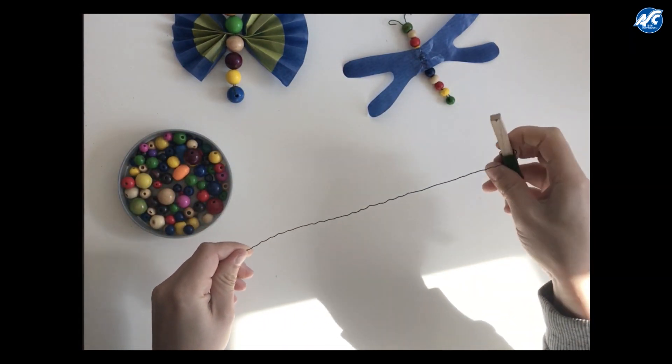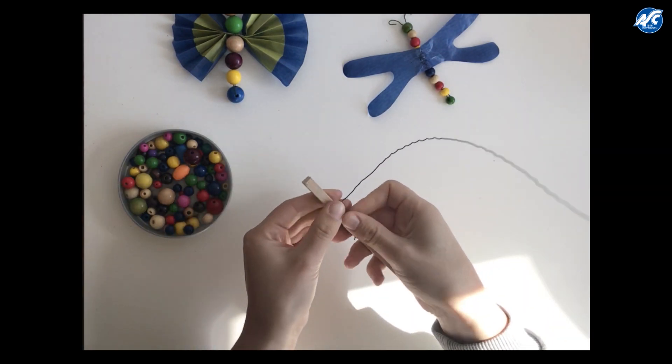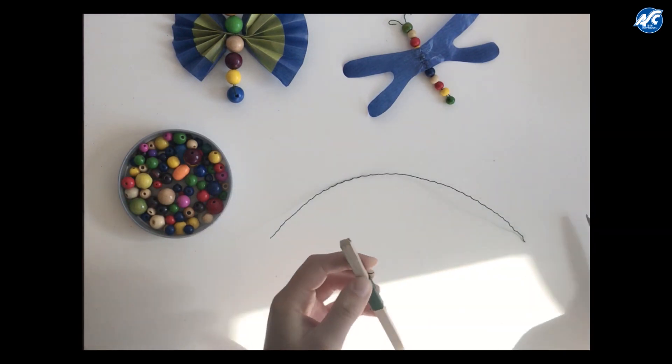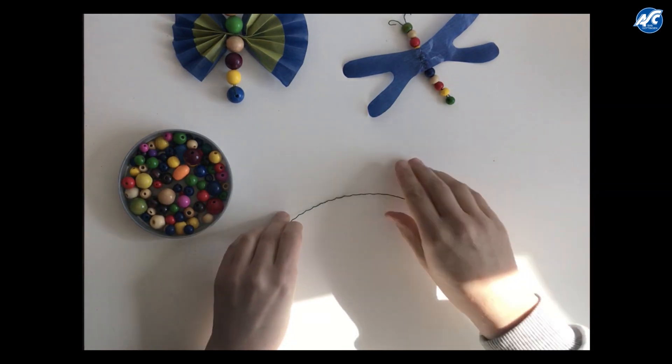First you have to take some of the wire and you cut it off in the end. Now you start with your first bead.